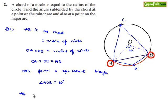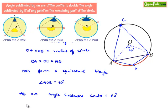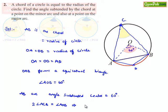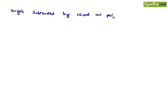If we consider AB as an arc, the angle subtended by it at the center is 60 degrees. Now, to find the angle subtended by the chord at point C on the major arc, we use the theorem that the angle subtended by any arc at the center is 2 times the angle subtended at any point on the circle. Therefore, 2 times angle ACB equals angle AOB, which gives angle ACB equal to half of 60 degrees, that is 30 degrees. Therefore, the angle subtended by the chord at a point on the major arc is 30 degrees.